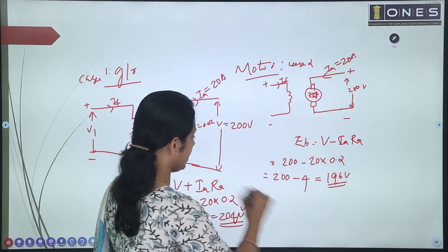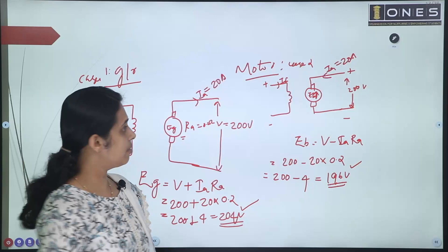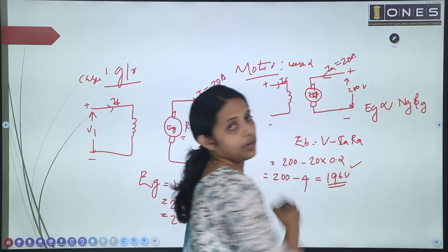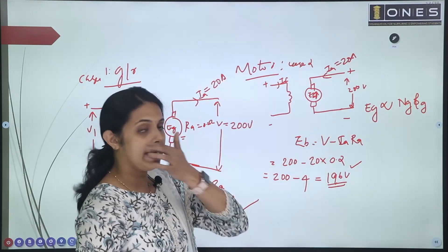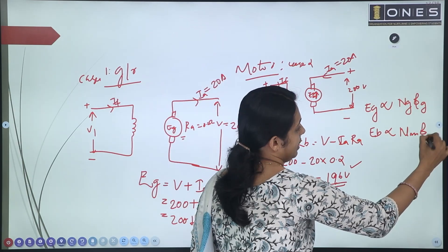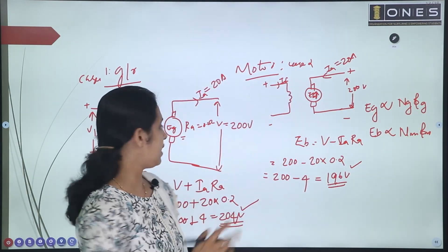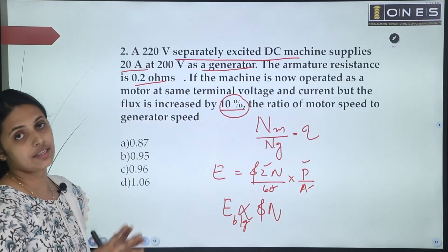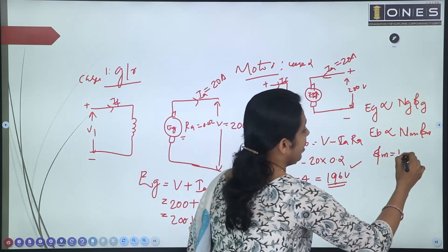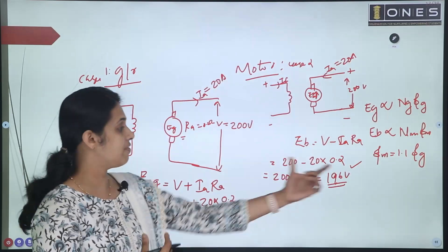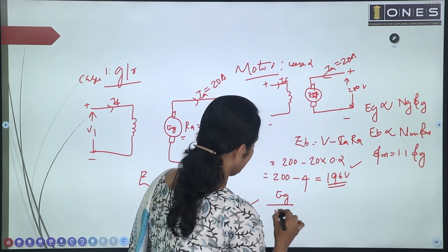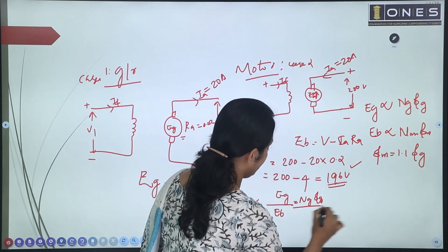Now we have EG = 204V in generator mode and EB = 196V in motor mode. The basic relationship is: EG ∝ NG × ΦG and EB ∝ NM × ΦM. In motoring mode the flux is increased by 10%, so ΦM = 1.1 × ΦG. Therefore: EG / EB = (NG × ΦG) / (NM × ΦM).